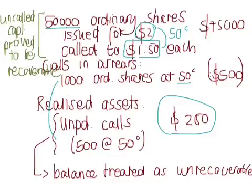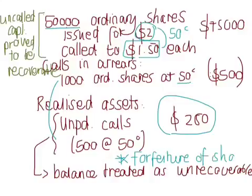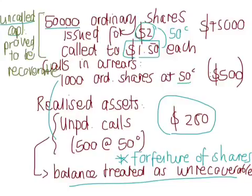The balance is therefore treated as unrecoverable, and this is the clue that we will have a forfeiture of shares. We are also told that any uncalled capital proved to be recoverable. Using this information, let's run through the initial journal entries.